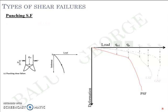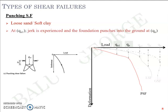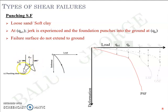Punching shear failure occurs in loose sand or soft clay. At a load of Q_U1, a jerk may be experienced in the foundation, and then the foundation starts to punch into the soil at load Q_U. In punching shear failure, the failure surface does not extend to the ground level, so no heave is observed — the foundation simply punches into the ground. It should be noted that these are theoretical distinctions; in reality there can be mixed behavior. Generally, punching shear failure is for loose sand and soft clay, while general shear failure is for dense sand and stiff clay.